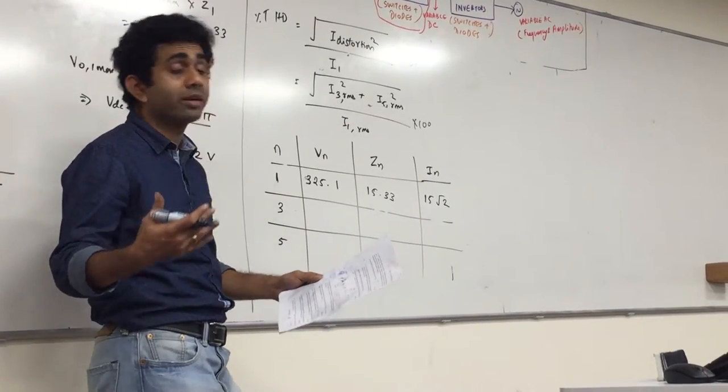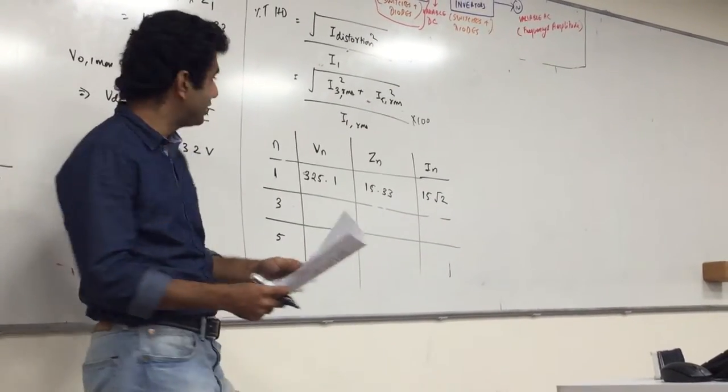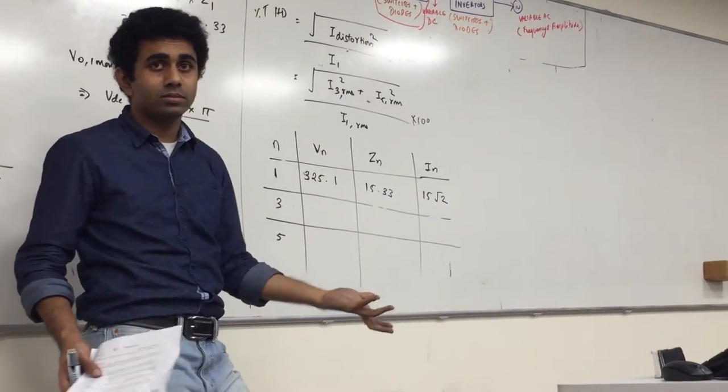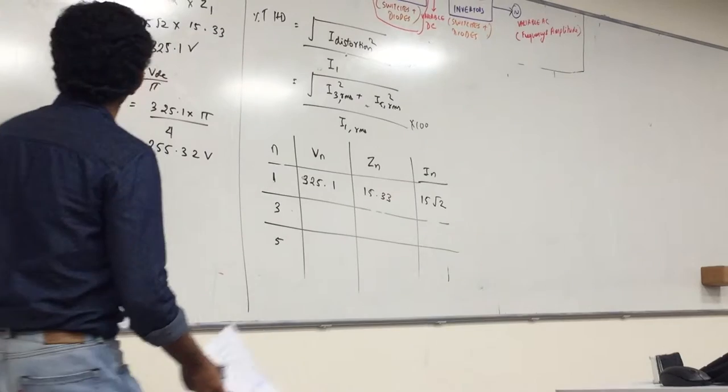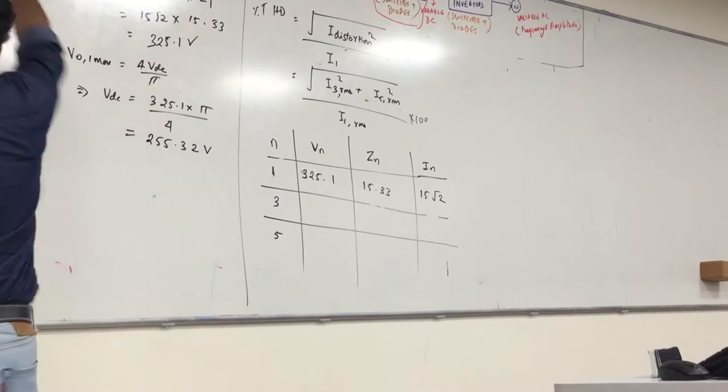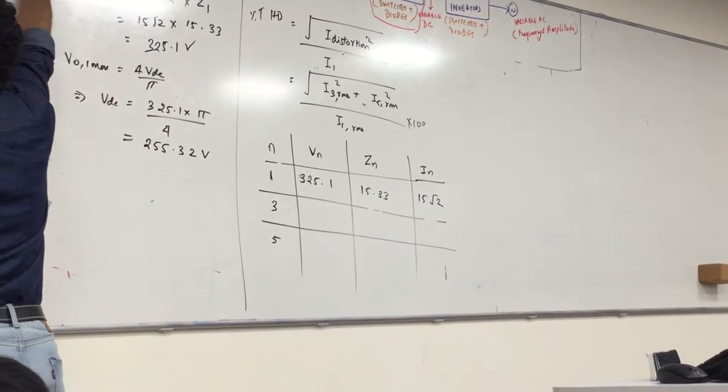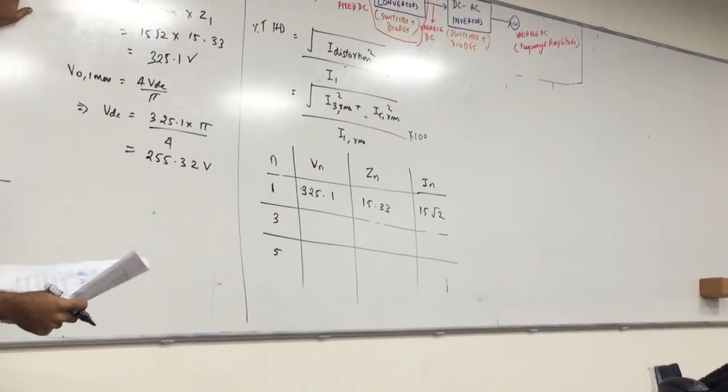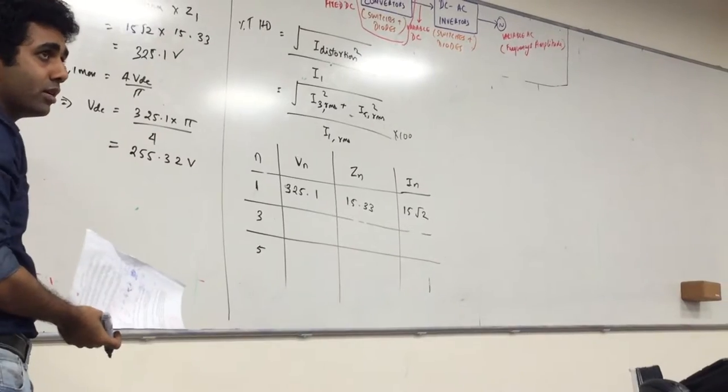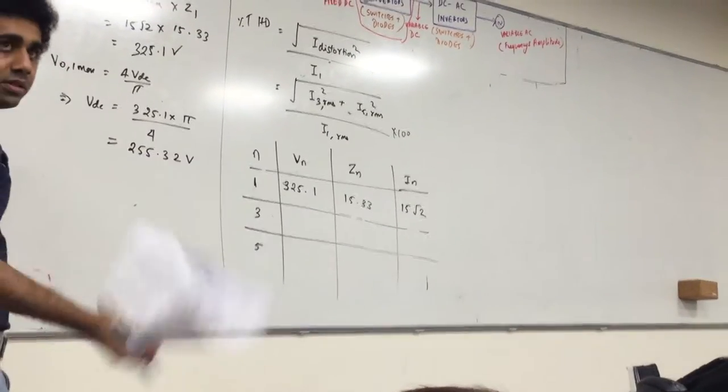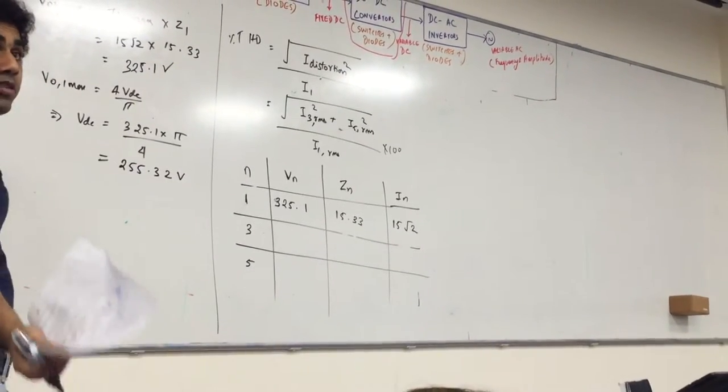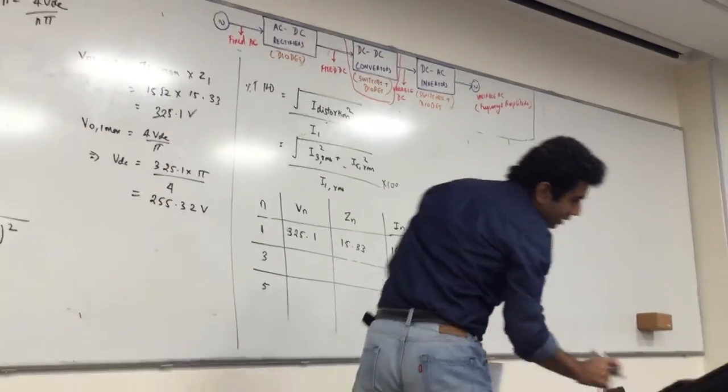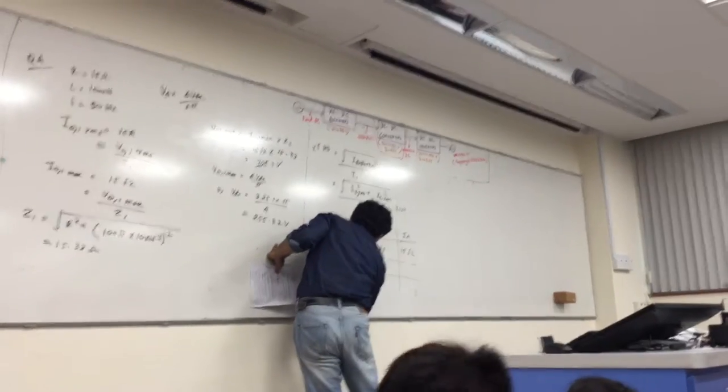This table is in terms of your max values for VN and IN. ZN is only one value. What about V3? You can use your formula to find it out, or just divide this by 3. V3 is going to be V1 by 3. This formula - your VN is 4VDC by N π. N is 1, I get 4VDC by π. When N is 3, I'm going to get 4VDC by 3π.